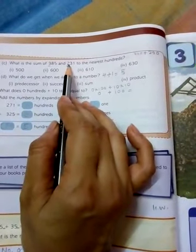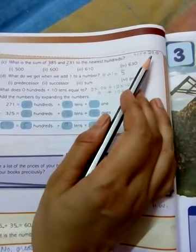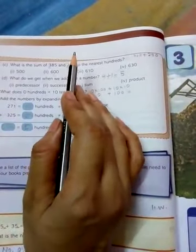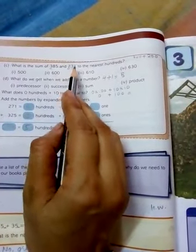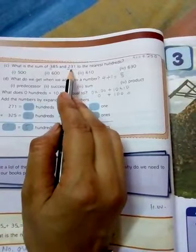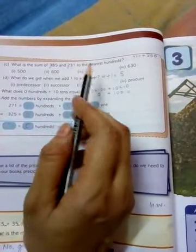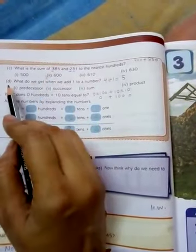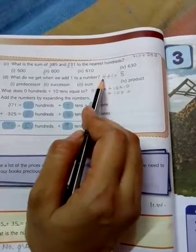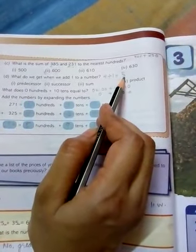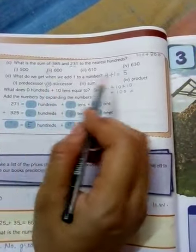Now check, 231 is near to 200. Yes, it is near to 200. So rounded off to 200. So 400 plus 200 is 600. The answer is 600. Next question: What is 4 plus 1? 5. So 4 plus 1 equals to 5. 5 is the successor of 4. The answer is successor. Whenever 1 is added to any number, we get successor.